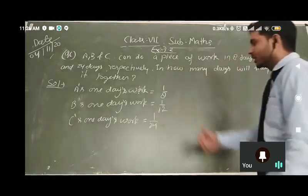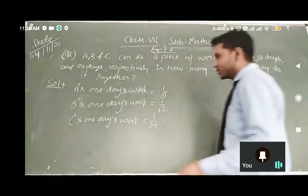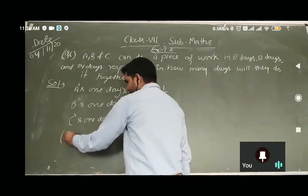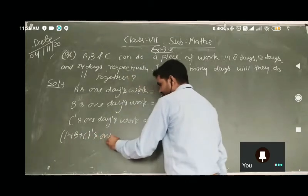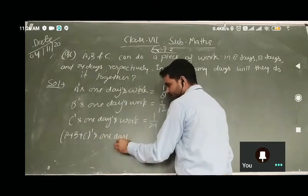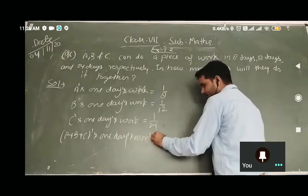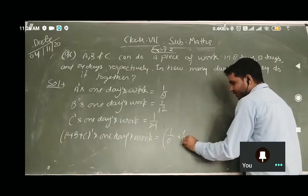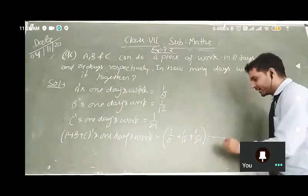When all three work together, we need to find out how many days it will take to complete. So we find their combined one day work: A plus B plus C's one day work, which is 1 upon 8 plus 1 upon 12 plus 1 upon 24. Let's find the LCM of these.